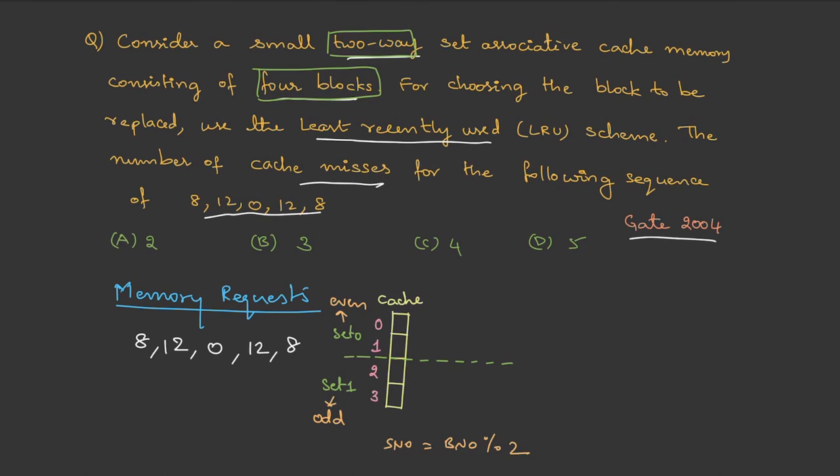Now let's fill the cache with the following memory request. The first is eight, so eight will be placed here because it is not there initially, this is a miss. Then we have twelve, again miss. Then zero, zero will be placed in line zero, again miss. Then twelve, twelve is available, therefore this is a hit. Because it has been accessed, let me move it to the right. Then we have eight.